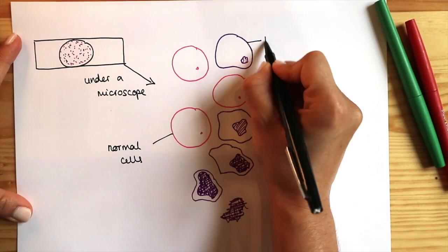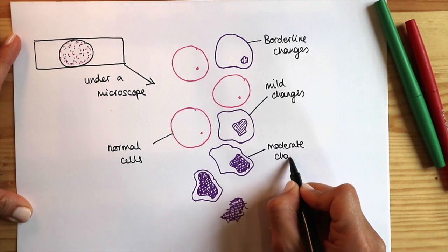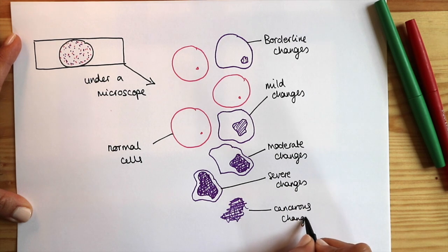When we describe abnormal cells, we either describe them as borderline changes, mild changes or moderate, severe and in a small number, cancerous changes.